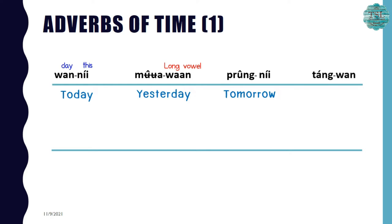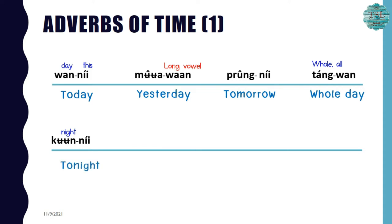The next one is ทั้งวัน. ทั้ง means 'whole' or 'all,' so ทั้งวัน means 'whole day' or 'all day.' The next one is คืนนี้. คืน means 'night' and นี้ means 'this,' so คืนนี้ actually means 'tonight.'